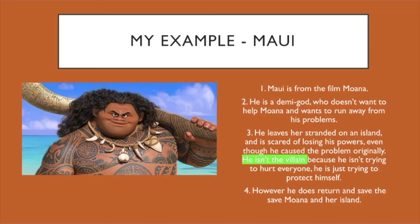Pick one of those and use my example to help you. I picked Maui — I love Moana. Question one, where is he from? Maui is from the film Moana. Question two, describe him: he's a demigod who doesn't want to help Moana; he wants to run away from his problems and keep his power. Question three, how is he an anti-hero? He leaves Moana stranded on an island and he's scared of losing his powers, even though he originally caused the problem. He isn't a hero — he does things that aren't really good — but he isn't the villain because he isn't trying to hurt anyone; he's just trying to protect himself. He is not the bad guy trying to destroy Moana's island, and he's not the creepy evil crab things trying to kill them, but he's not the good guy either.